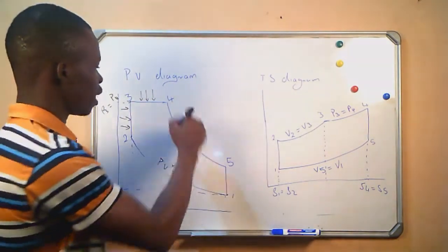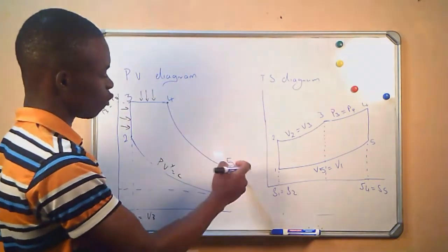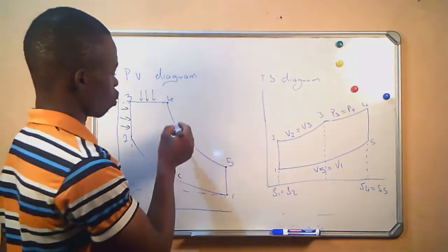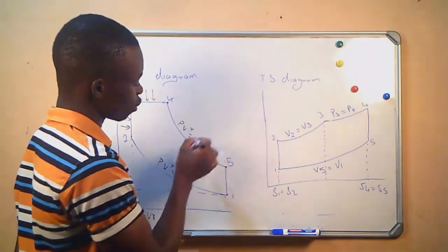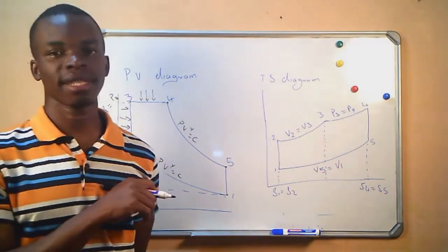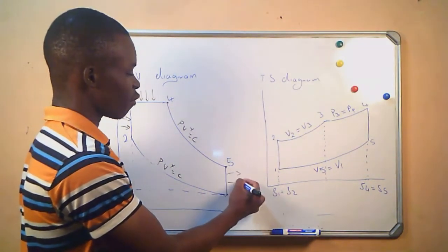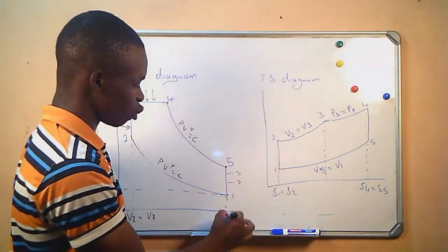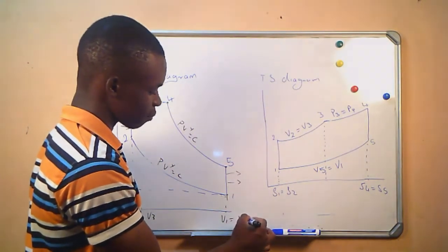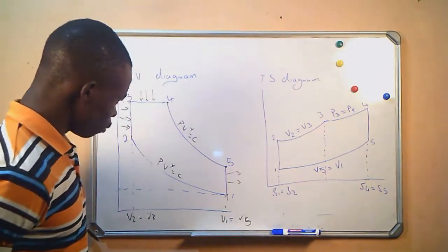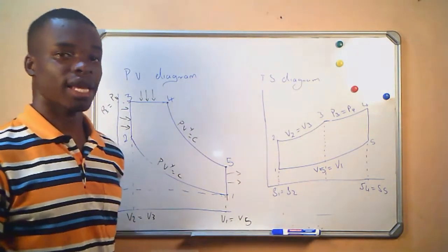And then from there, this will be our expansion from 4 to 5, or we can also say it's the power stroke, which also takes place using the law PV raised to gamma equals to C, which is the adiabatic law. And then finally, we have heat rejected from the system at constant volume where our V1 is equal to V5. And this is the PV diagram of the Joule cycle.